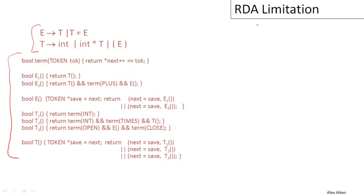Now let's think about what happens when we go to parse the input int, the simplest possible input string. Well, let's work through it. Remember we start with the function that implements all the productions for the non-terminal E. We're going to call E, and that will try calling E1, and what is E1 going to do?